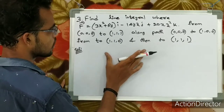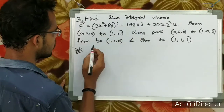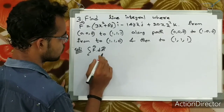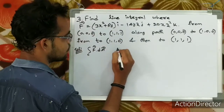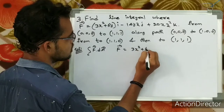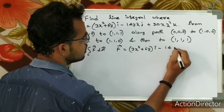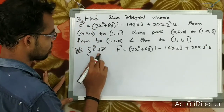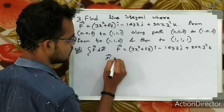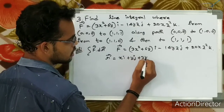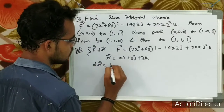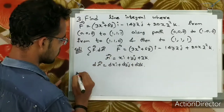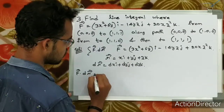So we have the line integral: the curve integral of f vector dot dr vector. The f vector is given as 3x squared plus 6y into i minus 14yz j plus 20xz squared k. The r vector is xi plus yj plus zk, so dr vector is dx i plus dy j plus dz k.